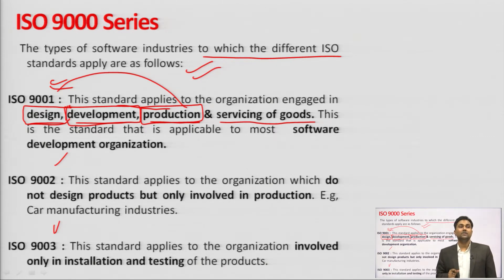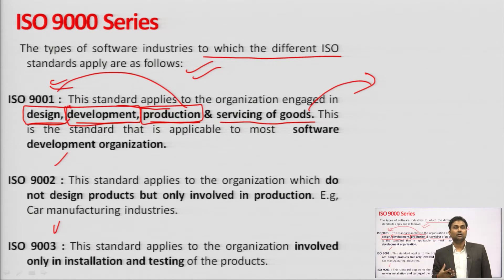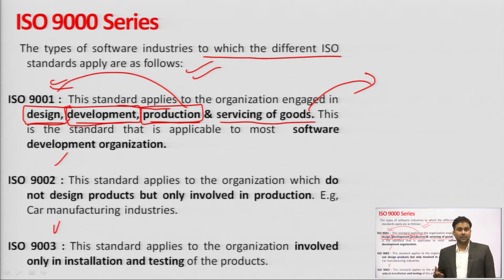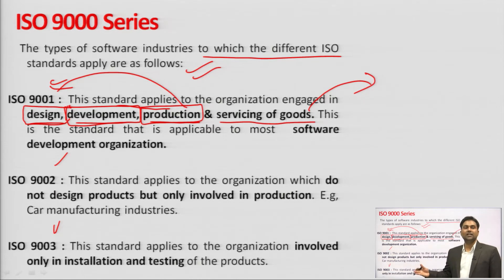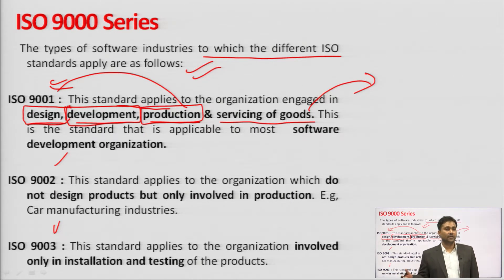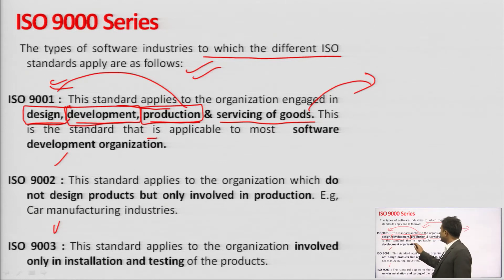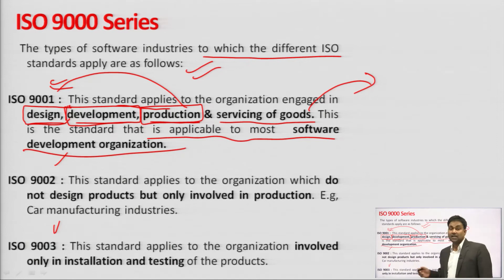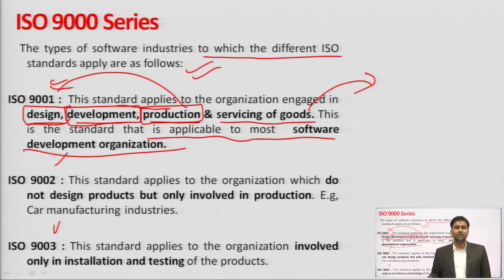For 9001 accreditation, the company must demonstrate reliability, robustness, and customer satisfaction after delivery of goods. This is the standard applied to most software development organizations. Many IT industries have adopted this — after software delivery, they provide maintenance free of cost for six months to one year, which is actually included in the initial budget.